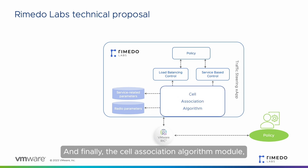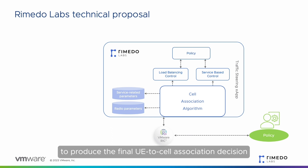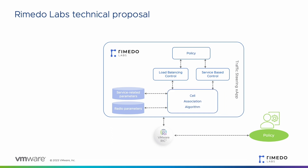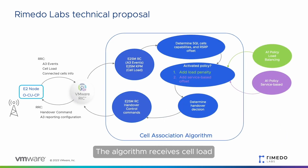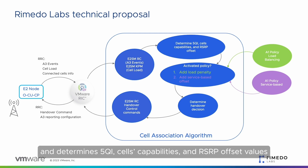And finally, the cell association algorithm module ingests data from the policy control modules and the network to produce the final UE to cell association decision. The algorithm receives cell load and RRC A3 events information via VMware distributed RIC's E2 layer, and determines 5QI, cell capabilities, and RSRP offset values.